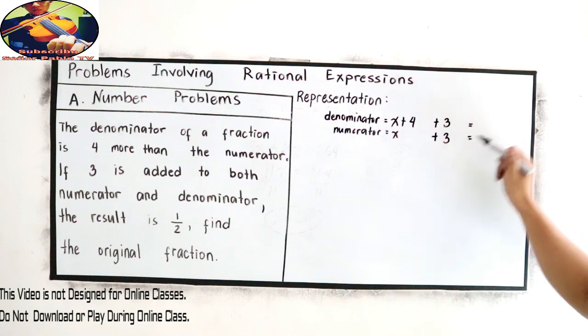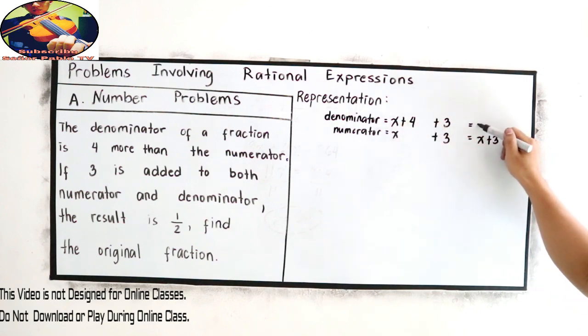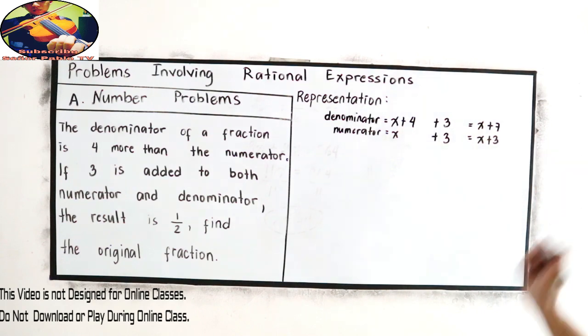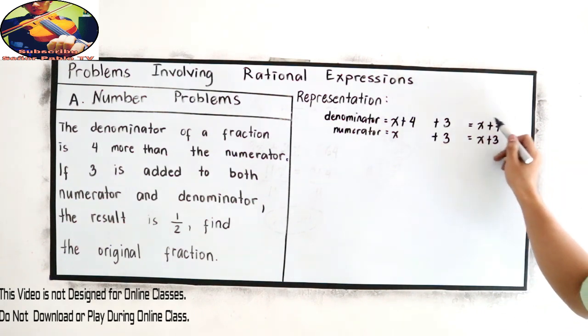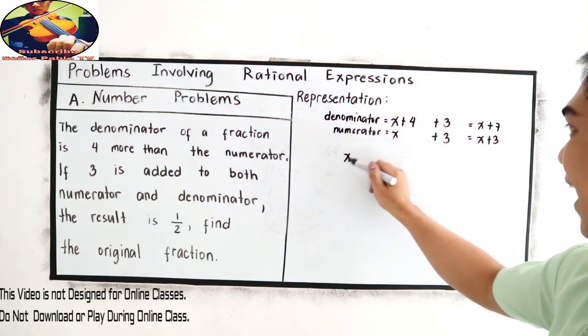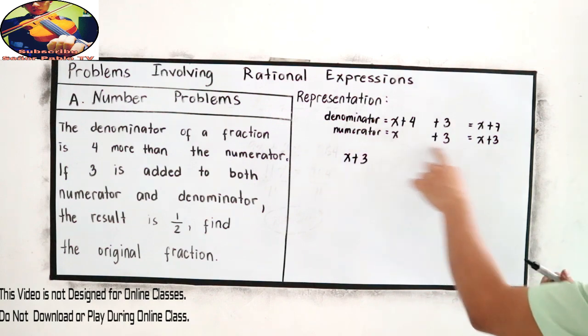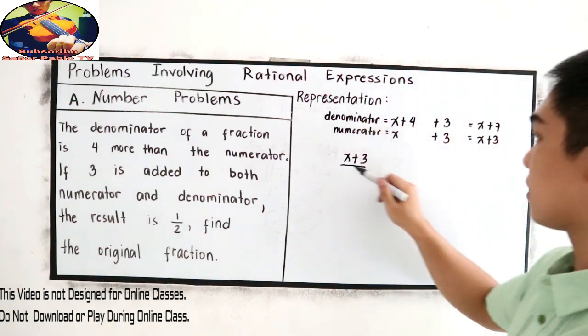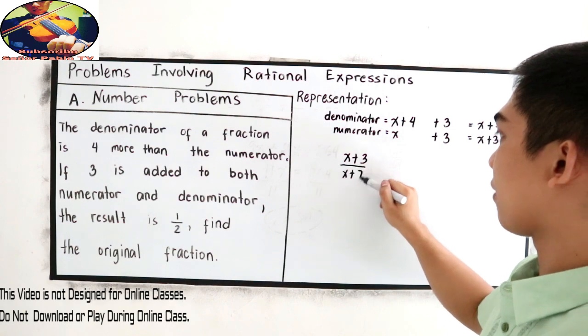This will become, for numerator, x plus three. And for denominator, x plus four plus three is seven. This will be our fraction. Our fraction is x plus three for the numerator over denominator is x plus seven.